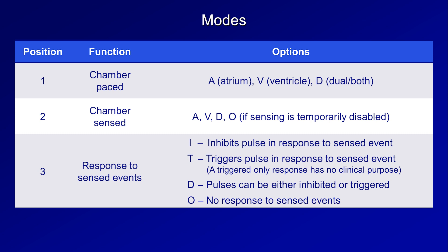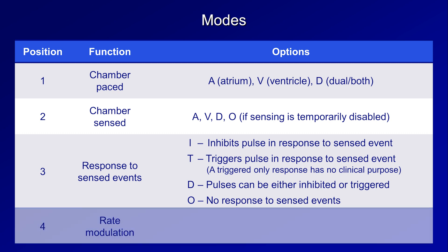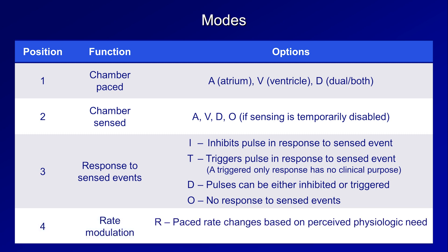When used, the fourth position indicates whether or not there is rate modulation available. An R means that the paced rate changes based on perceived physiologic need. The most common way for a pacemaker to determine this is via an accelerometer within the generator, which interprets repetitive physical motion as an indicator that the person is walking quickly, jogging, or swimming.